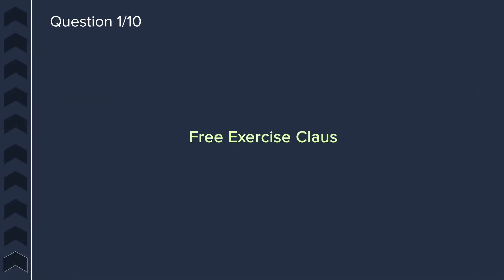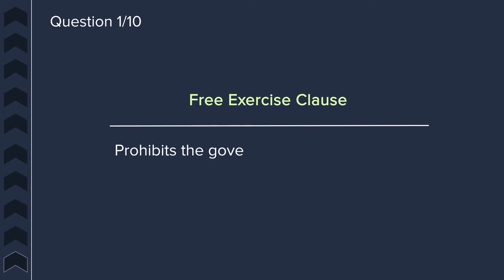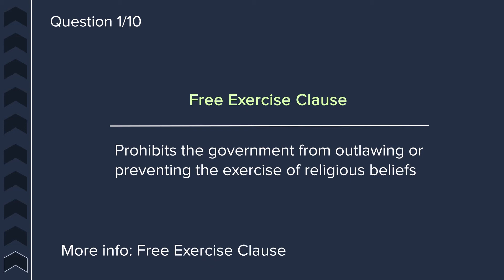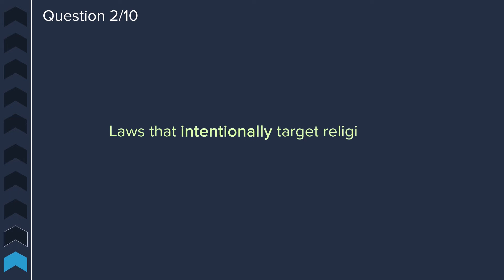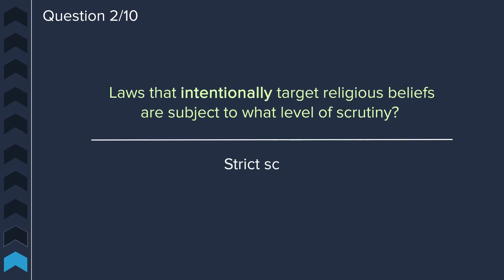Question one: what is the free exercise clause? The free exercise clause prohibits the government from outlawing or preventing the exercise of religious beliefs. Question two: laws that intentionally target religious beliefs are subject to what level of scrutiny? Strict scrutiny.